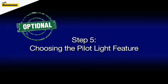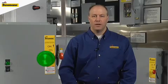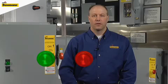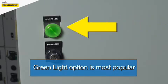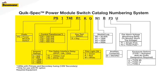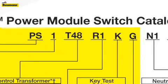The pilot light-on feature is available with three different colors to choose from: green, red, and white. This feature is a simple way for anyone to know that the power is energized to the unit when the light is glowing. We will simply add the G code into our example part number configuration.